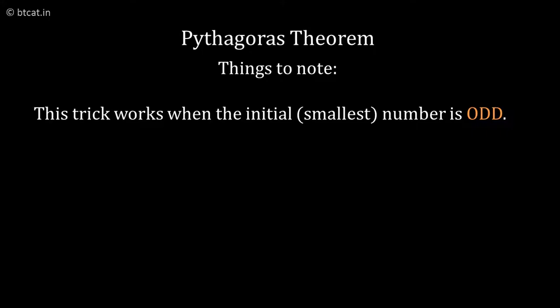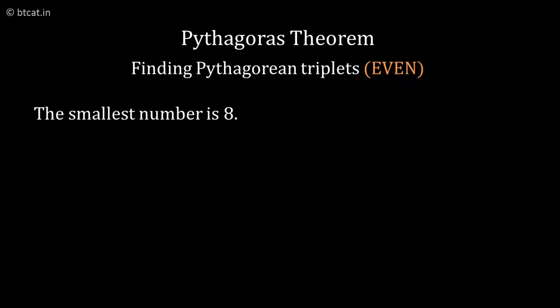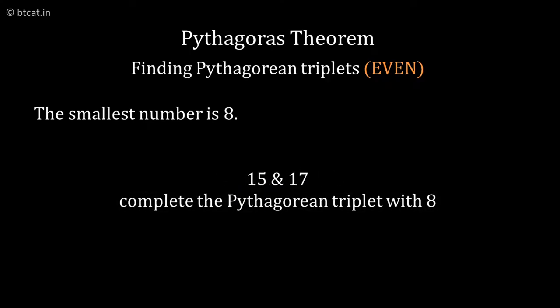I will also teach you the even number trick. Let us take the number 8. What you do is first half it: it becomes 4. Do the square of 4, we get 16. Do one less and one more, so we get 15 and 17. So the answer is 8, 15, 17 - that is the corresponding triplet.